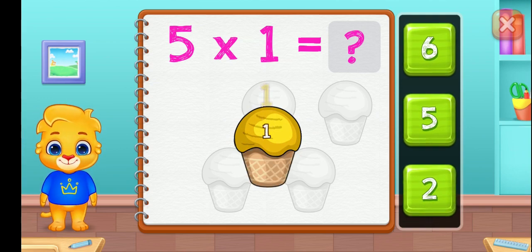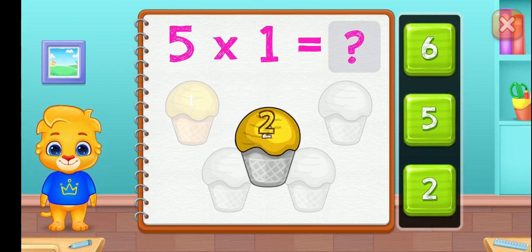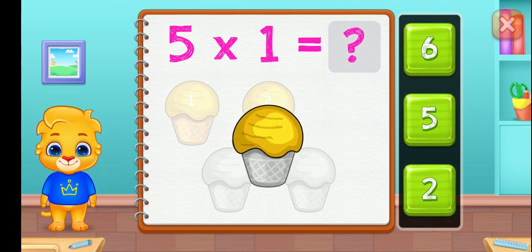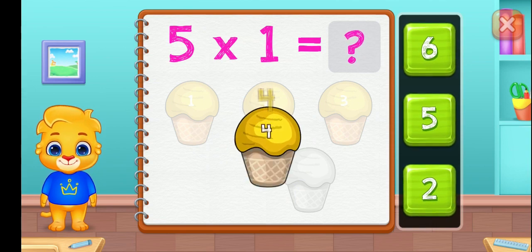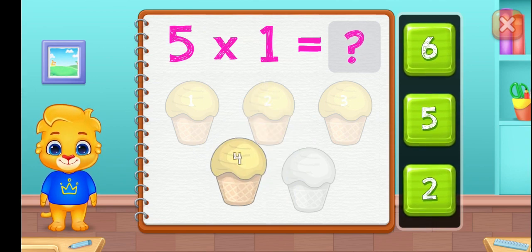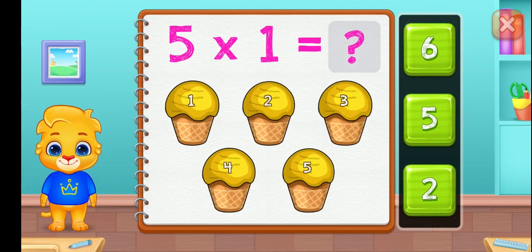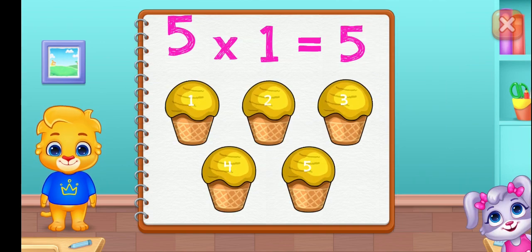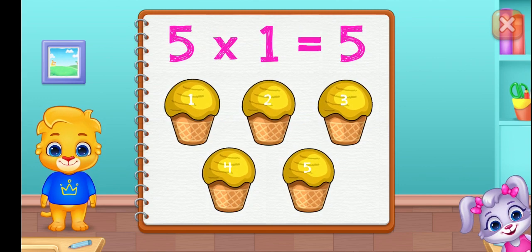One. Two. Three. Four. Five. Five groups of one equals five.